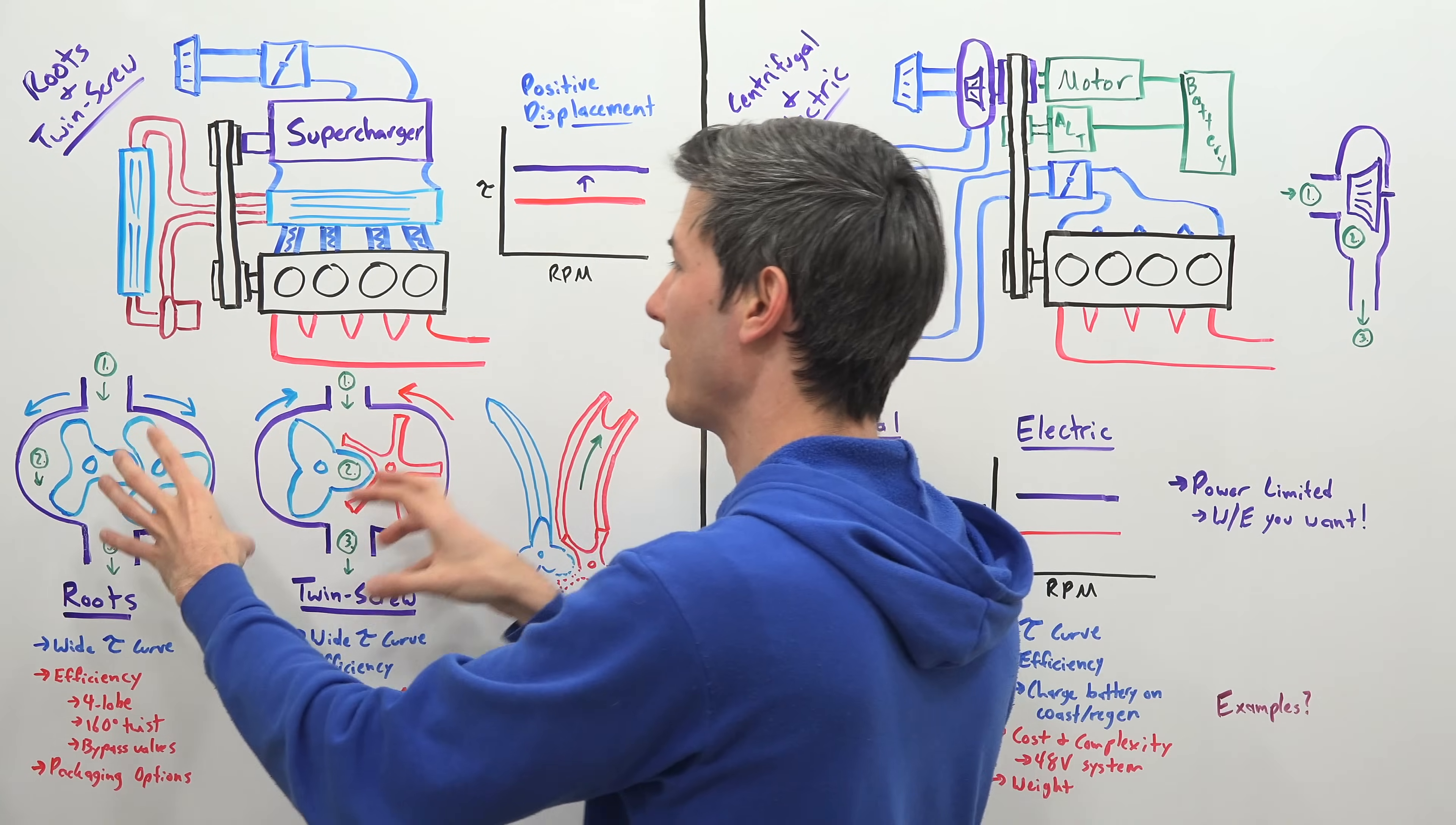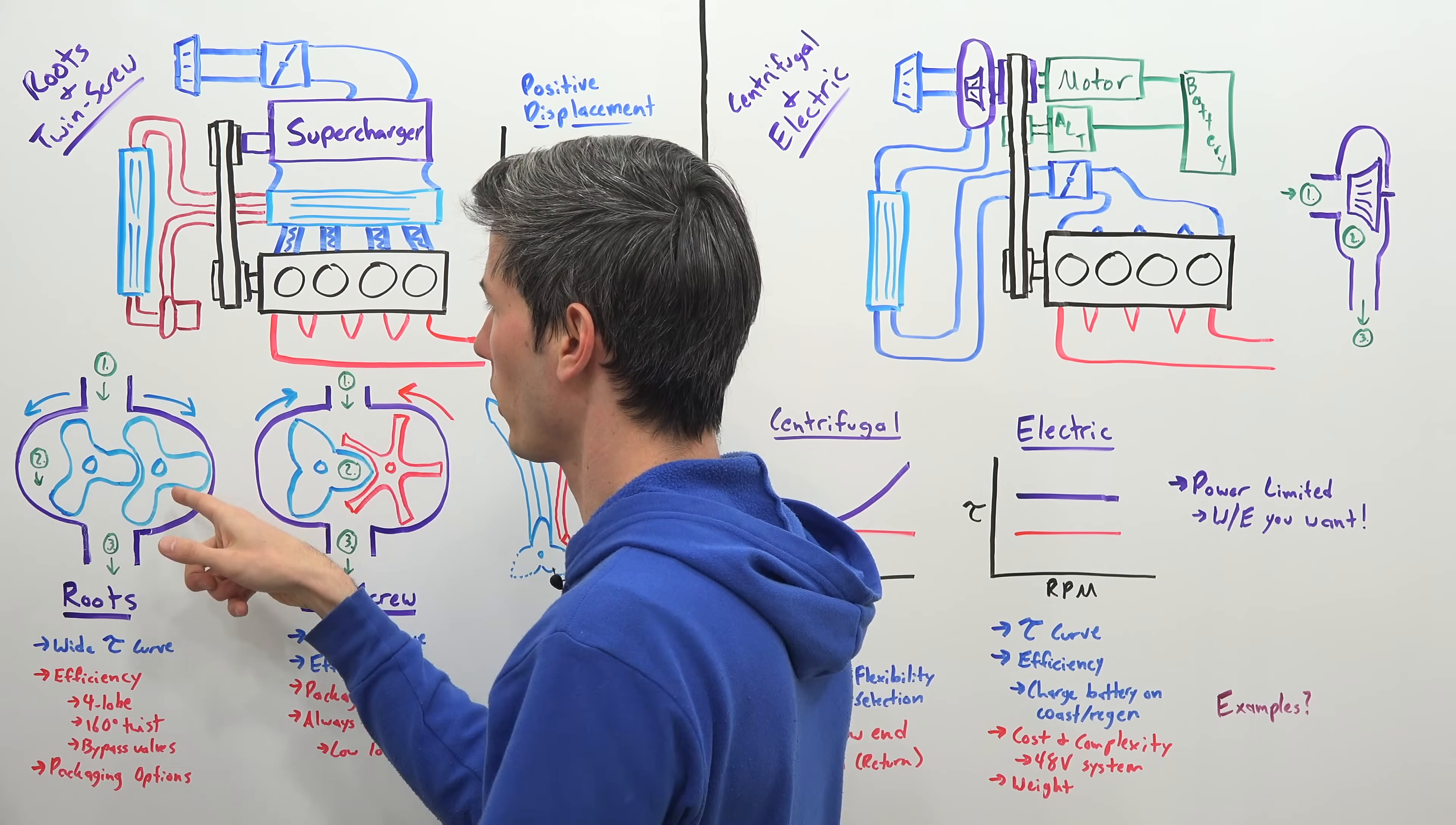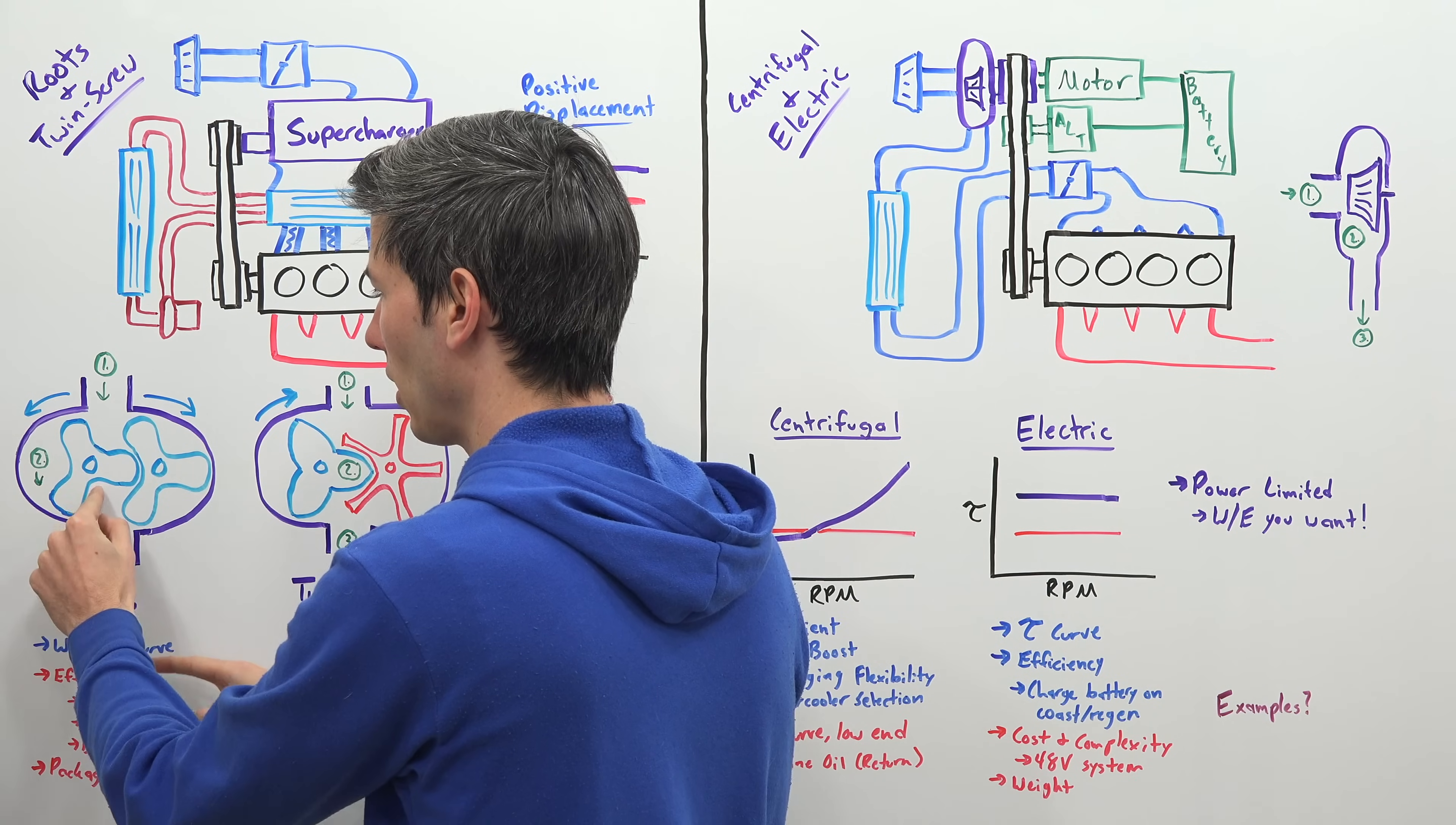However, the mechanics of what's going on inside is quite different. Starting off with the Roots style supercharger, you have two rotors inside. These are being driven by the crankshaft through a belt which then rotates a gearing mechanism which will rotate both of these rotors. Now at the entrance of this Roots supercharger the rotors are rotating away from each other. So you have that air come in,